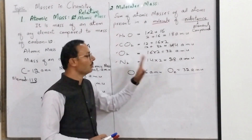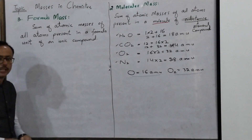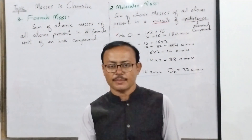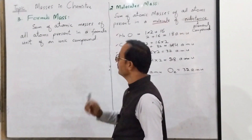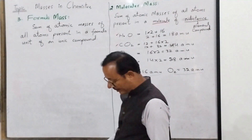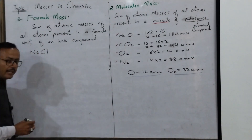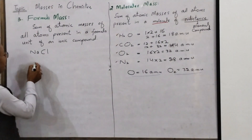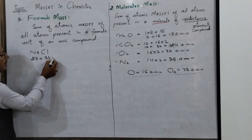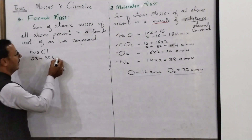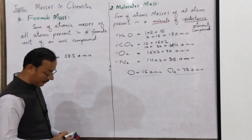We have another mass, which is formula mass. So we have: first atomic mass, then molecular mass, now formula mass. For example, if we have NaCl — sodium's atomic mass is 23, plus chlorine's mass is 35.5 — so its formula mass is 58.5 AMU.